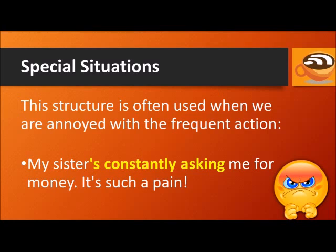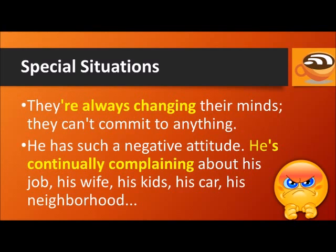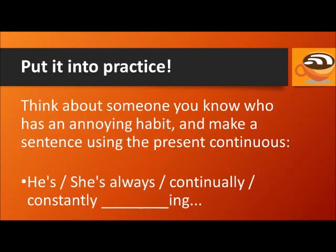For example: My sister's constantly asking me for money — it's such a pain. They're always changing their minds — they can't commit to anything. He has such a negative attitude — he's continually complaining about his job, his wife, his kids, his car, his neighborhood. Now put it into practice: think about someone you know who has an annoying habit, and make a sentence using the present continuous.